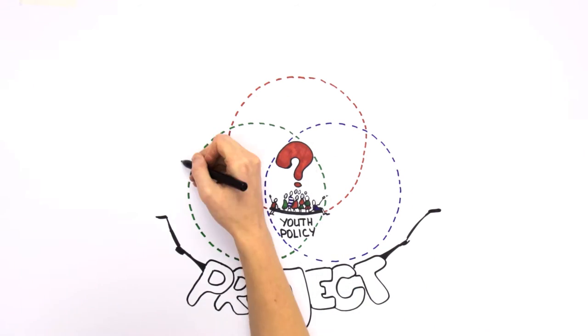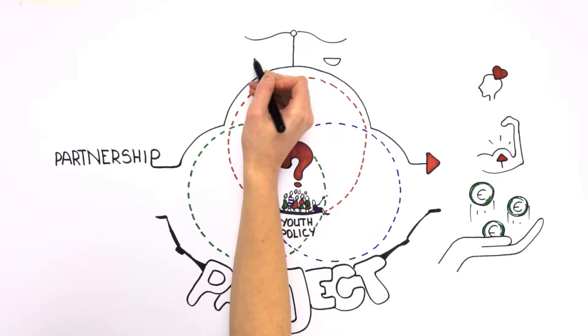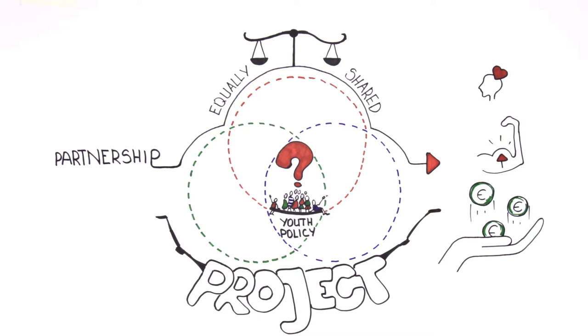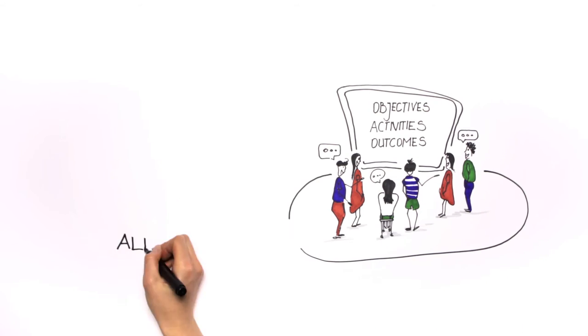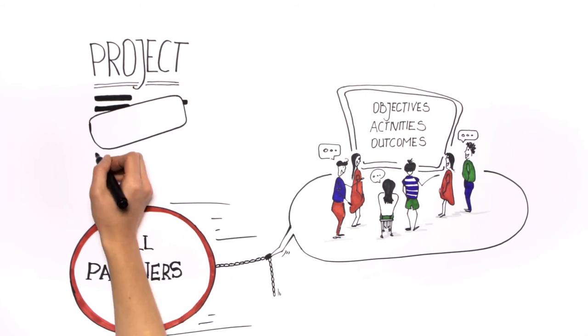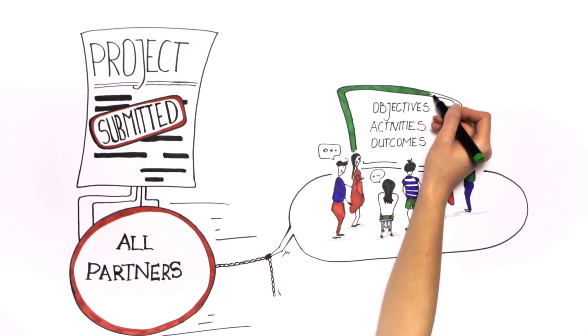The partnership is more likely to be effective if interests, effort, and contributions are equally shared. A good participatory project consists of consulting and involving all partners in the project design and implementation prior to the project proposal being submitted. Project objectives, activities, and outcomes should reflect each partner's interests and should be commonly agreed.